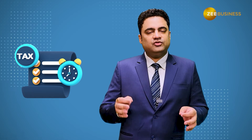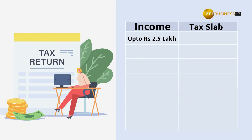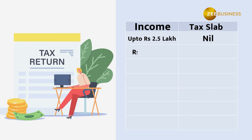Next, let's discuss income tax slab rates for both senior and super senior citizens as per the new tax regime. The tax slabs for both categories are the same under the new regime. For income up to Rs 2.5 lakh, they pay 0% income tax. For income between Rs 2.5 lakh and Rs 5 lakh, they pay 5% income tax.